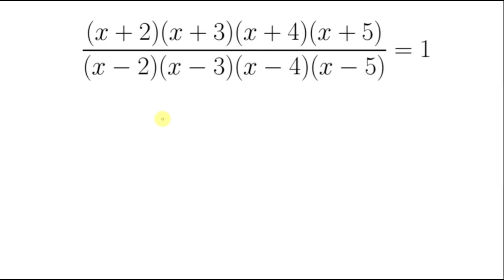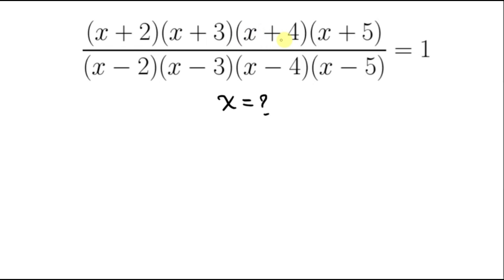Welcome back to my YouTube channel. Let's solve this math question, which says: find x for which (x+2)(x+3)(x+4)(x+5) all over (x-2)(x-3)(x-4)(x-5) is equal to 1.